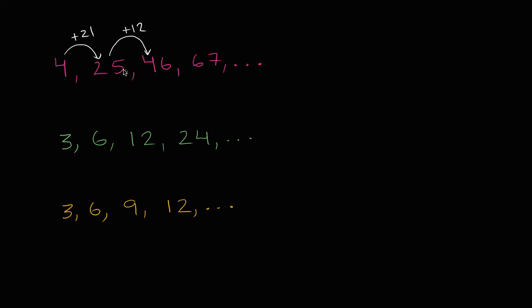So it looks like to go from one number to the next, I'm just adding—I wrote 12 by accident—21. I'm just adding 21 over and over again. So that's going to be 46 plus 21 is 67.